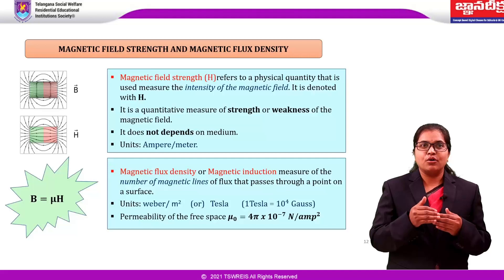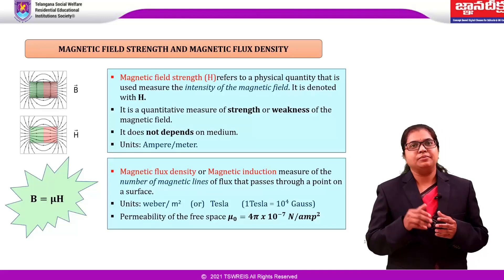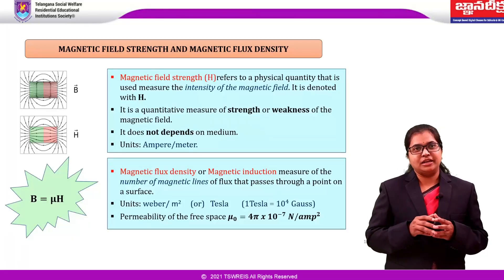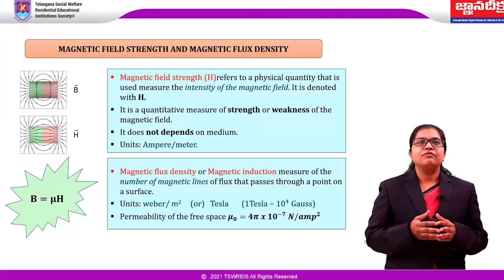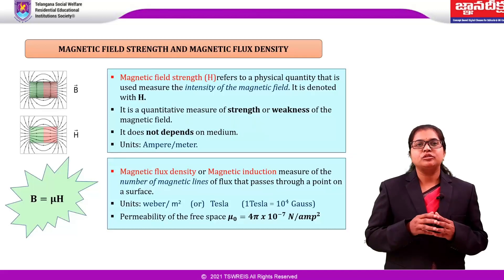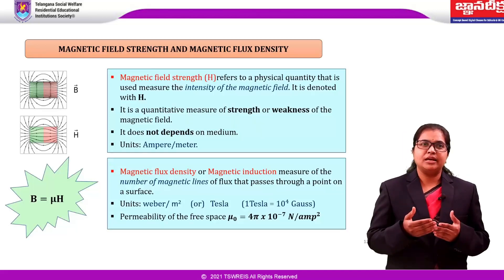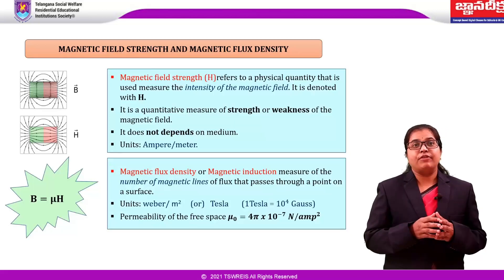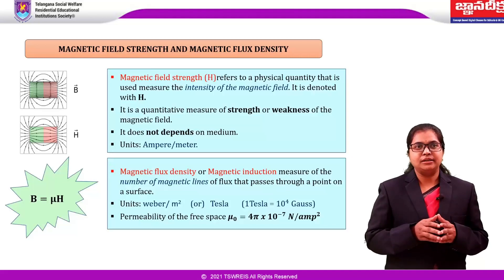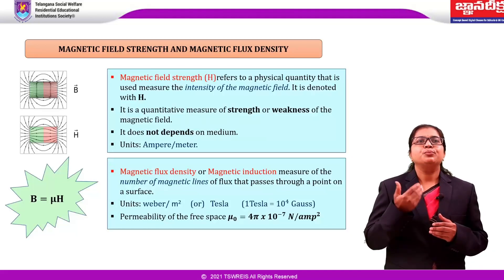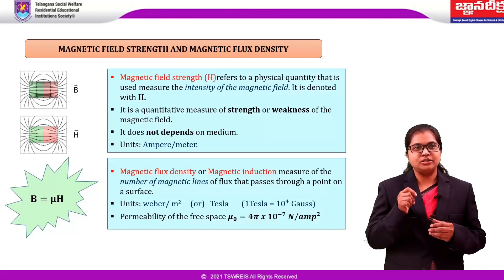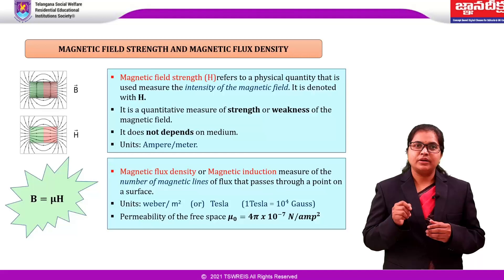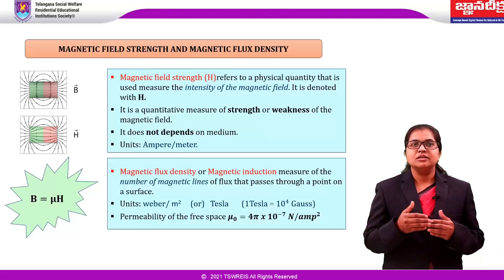Magnetic flux density or magnetic induction, denoted B, measures the number of magnetic field lines or flux that passes through a point on a surface. The units are Weber per meter square or Tesla. 1 Tesla is equal to 10 to the power 4 Gauss. The relation between them is B equals mu H, where mu is permeability. For free space, B equals mu-naught H. Mu-naught is the permeability of free space, equal to 4π × 10⁻⁷ Newton per ampere square, which is very important in solving problems.